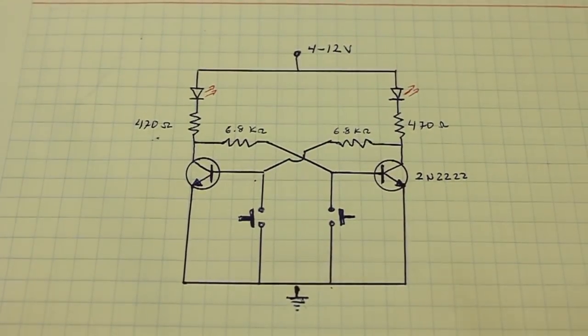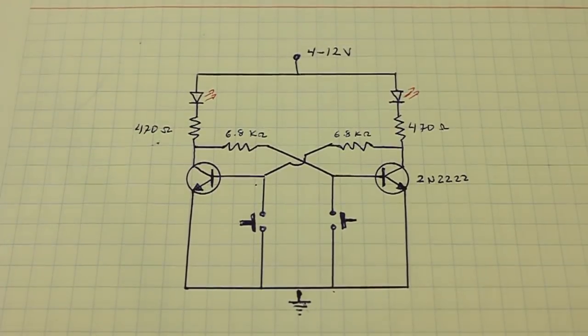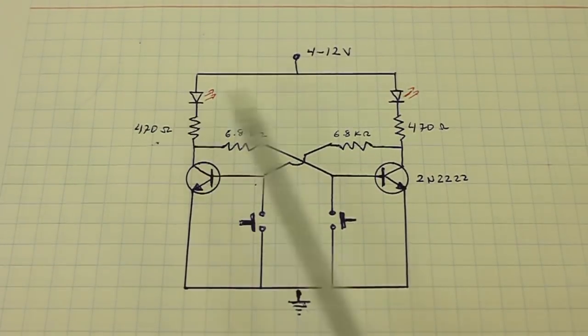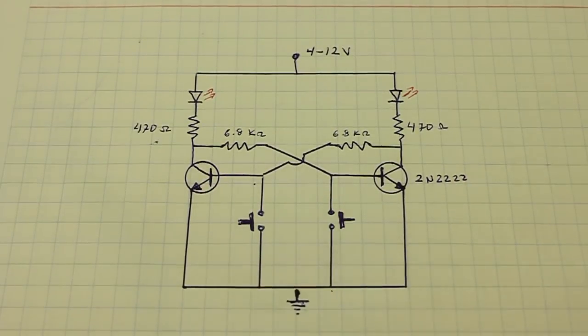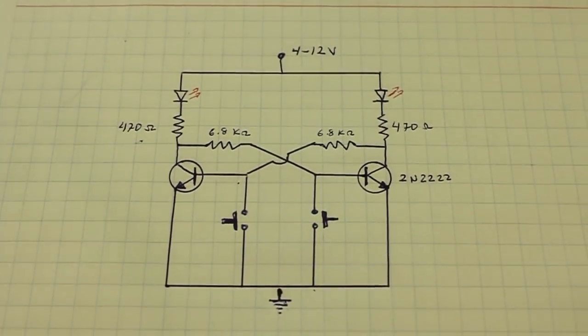This is the schematic. Let's see how the circuit works. We have the two LEDs, four resistors, a couple of transistors, and two push-button switches.